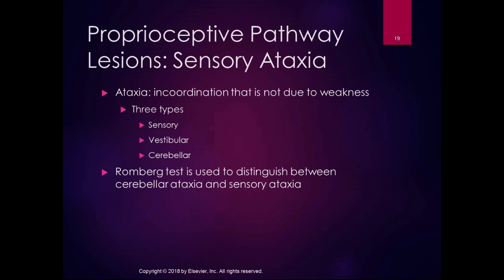When we lose the proprioceptive pathway, we end up with what is called sensory ataxia. Ataxia can be thought of as incoordination — disorganized movement — because we're not getting the sensation needed to organize movement. By definition, ataxia is incoordination that is not due to weakness. There are three types of ataxia: sensory, vestibular, and cerebellar.